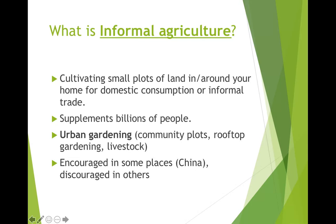We also have some additional content not covered by Rubenstein at the end of this chapter. We talk about informal agriculture — this is where people are cultivating their own small plots of land, usually for their own home consumption, though sometimes it's sold. We talk about urban gardening as one type — community plots, maybe right on a rooftop or on an abandoned lot. We're seeing this being encouraged in places around the globe like China, where feeding all people can be challenging, though in some places this kind of agriculture is actually discouraged.